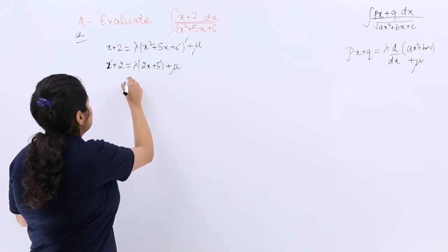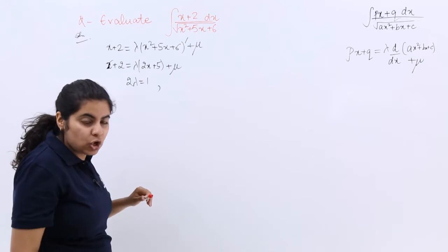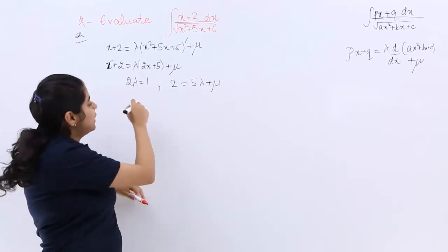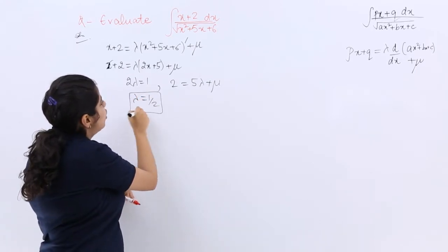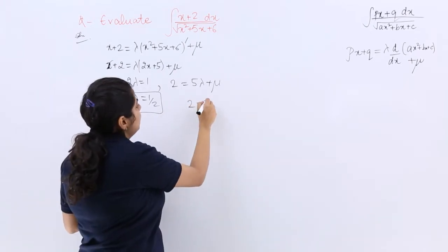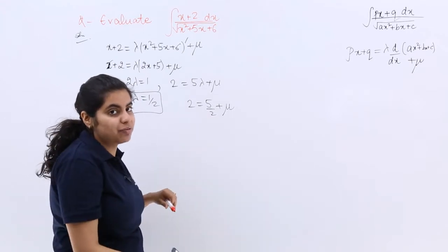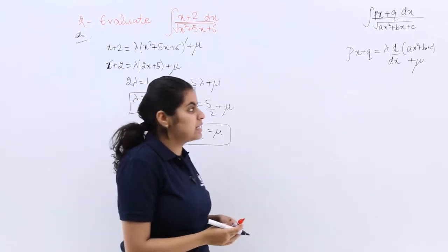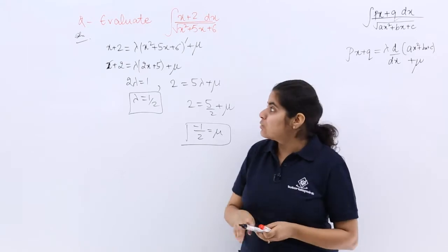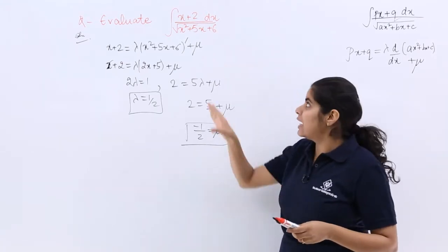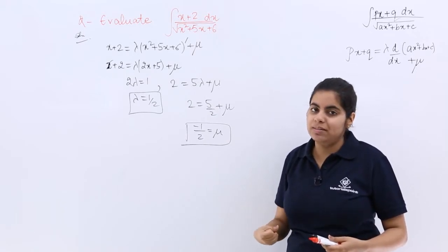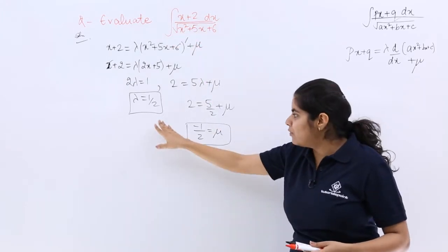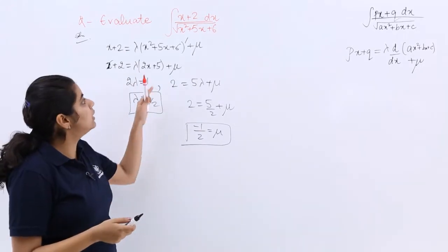Differentiating x² + 5x + 6 gives 2x + 5, so x + 2 = λ(2x + 5) + μ. Comparing x-coefficients: 2λ = 1, so λ = 1/2. Comparing constants: 2 = 5λ + μ, giving μ = 2 − 5/2 = −1/2. We do this because direct substitution doesn't work when the numerator differs from the derivative of the denominator.